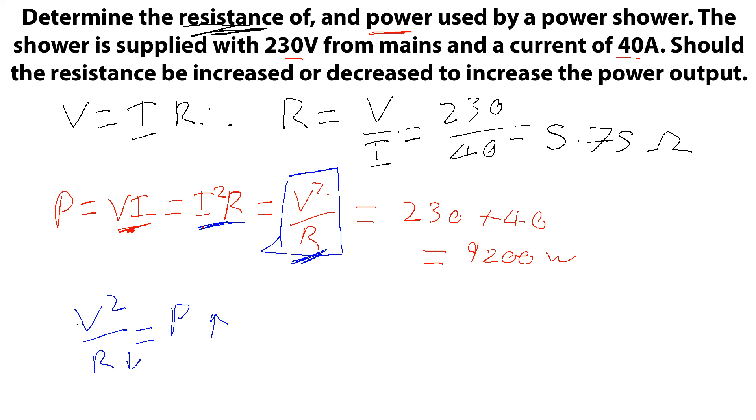If we increase the resistance, we're dividing the voltage squared by a larger number, and so we get a smaller power. So if we want to increase the power output, then the resistance of this power shower must go down.